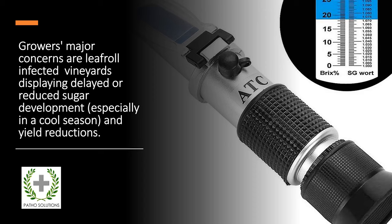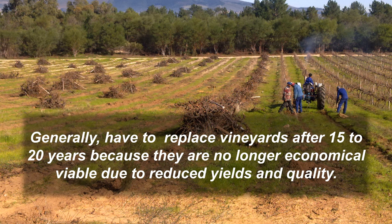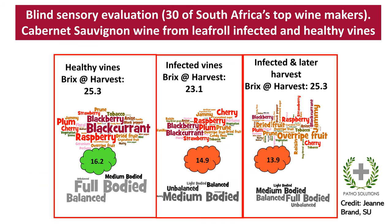This happens especially in cooler seasons where sugar levels don't reach the required levels for winemaking, and then of course there are yield reductions within such vineyards. In general, where leafroll control is not applied, grapevines have to be replaced between 15 and 20 years in South Africa because they're no longer economically viable. This makes it an extremely marginal crop to grow, seeing as the input costs in establishing vineyards are very expensive.